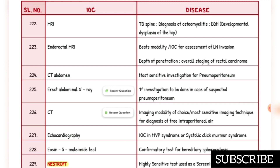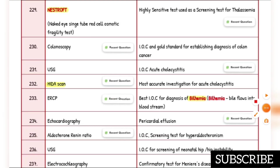Confirmatory test for hereditary spherocytosis is eosin-5-maleimide (EMA) test. High sensitivity test used as screening test for thalassemia is the Nestroft test, which is the naked eye single tube red cell osmotic fragility test.